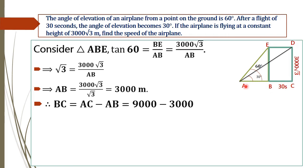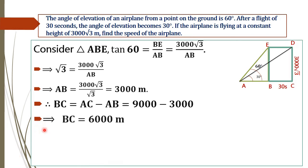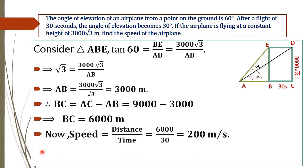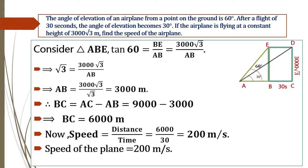We can see that BC equals AC minus AB. Therefore BC equals 9000 minus 3000, which gives BC equals 6000 meters. The next step is to find the speed of the airplane. Therefore, speed equals distance divided by time, which is 6000 meters divided by 30 seconds, equal to 200 meters per second. The speed of the plane is 200 meters per second.